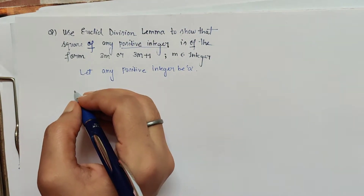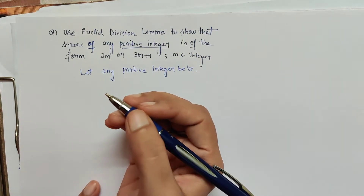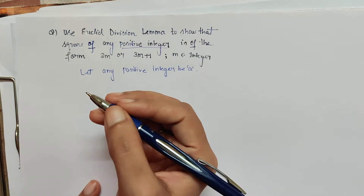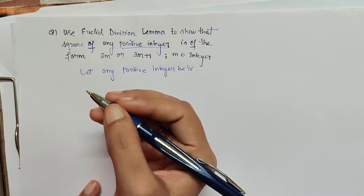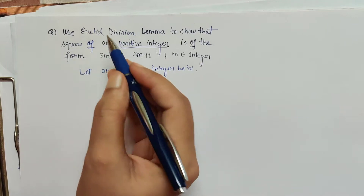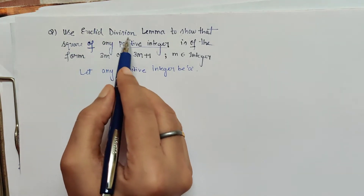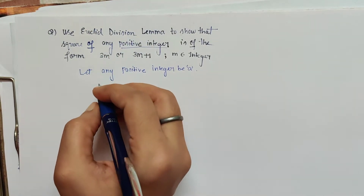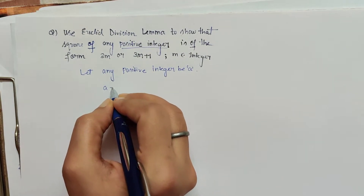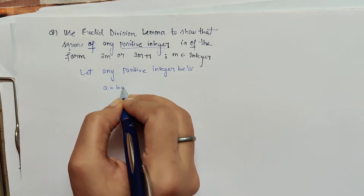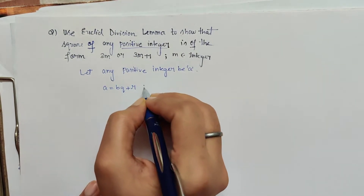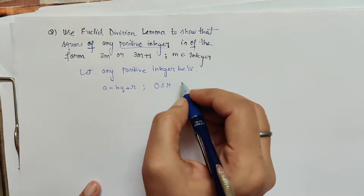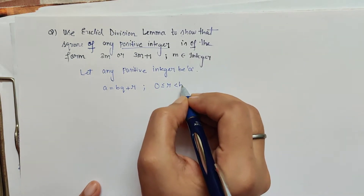All these questions, as discussed in previous videos, are based on Euclid's division lemma, and in this question itself it says to use Euclid's division lemma. So we write Euclid's division lemma: a = bq + r, where r is greater than or equal to 0 but less than b.